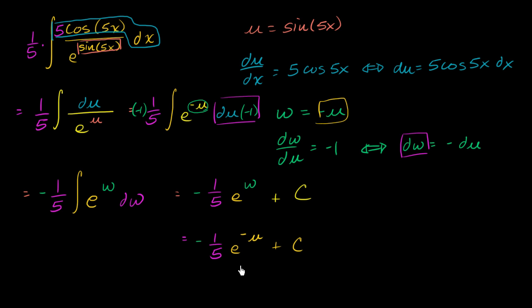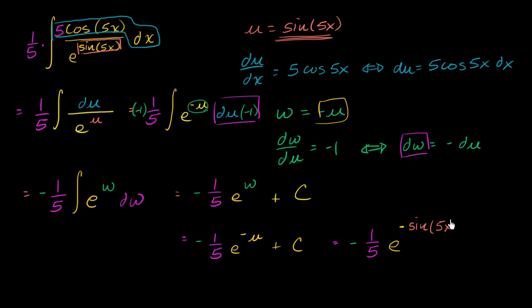Now we just have to do all of our unsubstituting. We know that w is equal to negative u, so this is equal to negative one fifth e to the negative u plus c. But we're still not done — we know that u is equal to sine of 5x. So we can write this as negative one fifth times e to the negative sine of 5x, plus c.